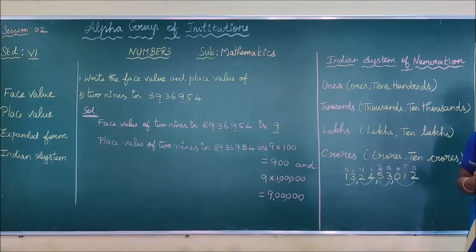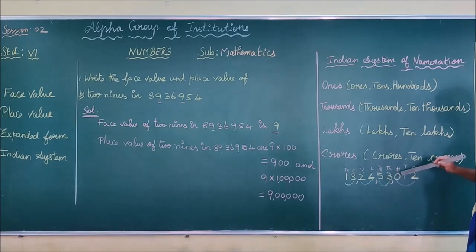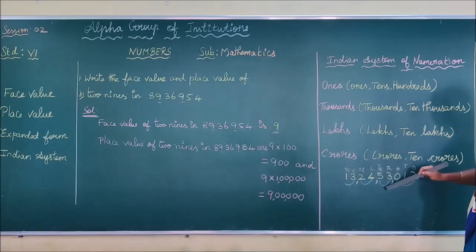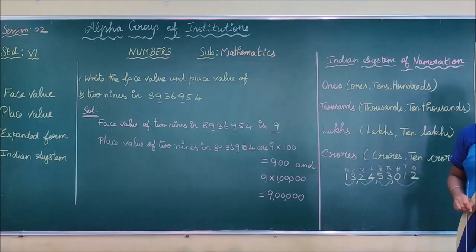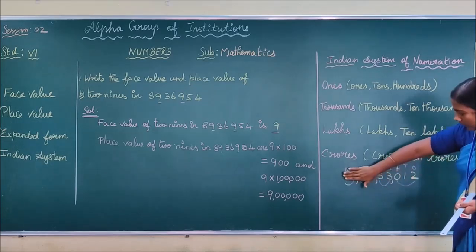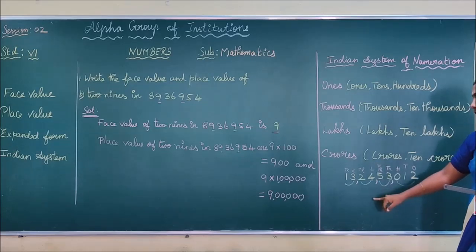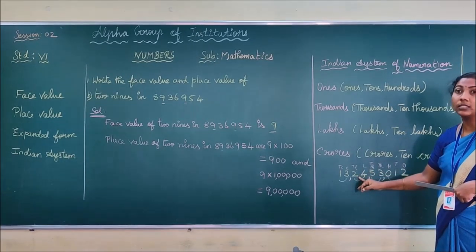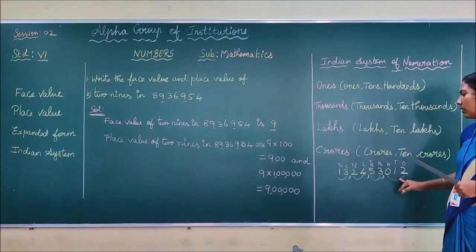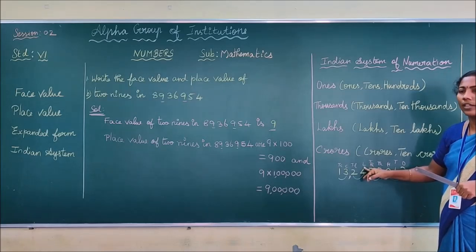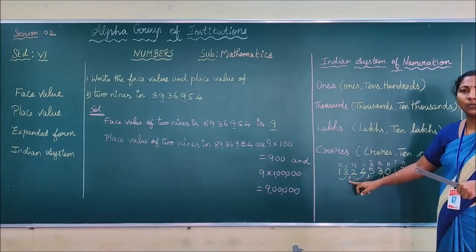In today's number, you have to write the number and place the commas as per the Indian system of numeration, and then write what periods are present in the number. What are the periods in this number? Ones, thousands, lakhs, crores. If your number goes up to two periods only, you write up to two periods — that is, ones and thousands. I hope you understand what I am saying. Now we place the commas as per the Indian system of numeration.